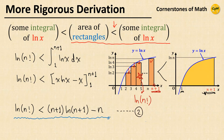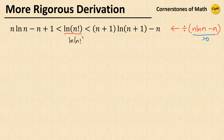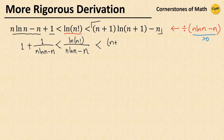So from inequalities 1 and 2, we have: n·ln(n) - n + 1 < ln(n!) < (n+1)·ln(n+1) - n. Dividing through by n·ln(n) - n, which is clearly positive for natural number n, we get: 1 + 1/(n·ln(n) - n) < ln(n!)/(n·ln(n) - n) < [(n+1)·ln(n+1) - n] / [n·ln(n) - n].